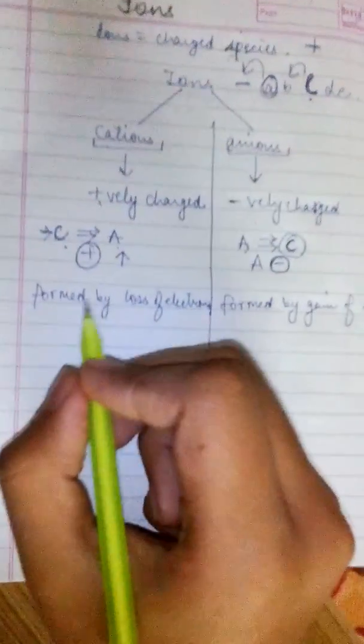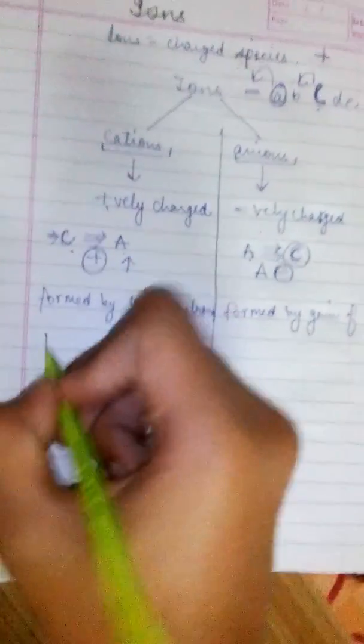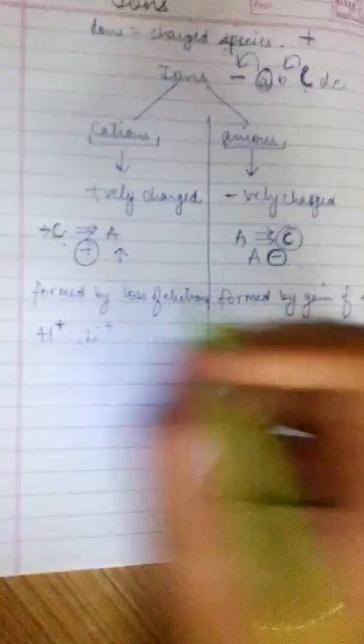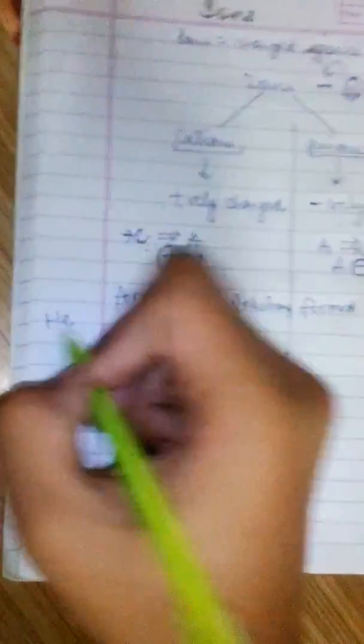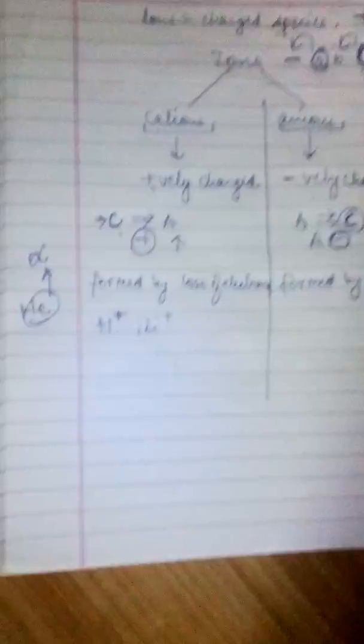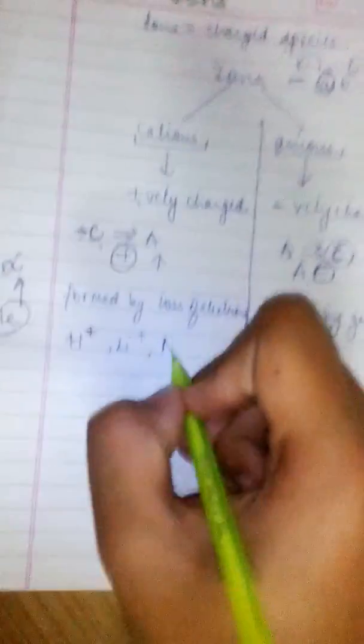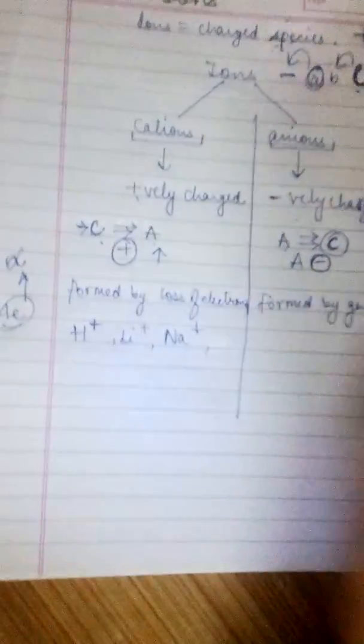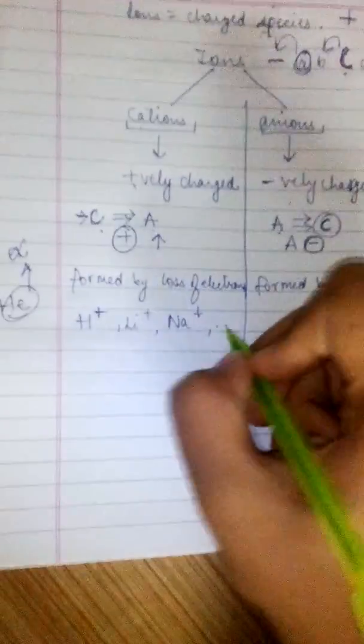We are very famous in having cations. So we have cations are H positive, Li positive. Actually we have helium as well, but helium, we have alpha particles. Lithium, sodium, the most common one, and so on.